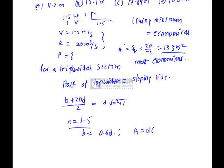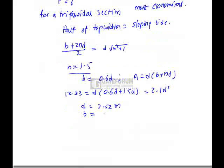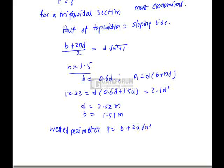Area equals D into B plus nD. So 13.33 equals D into 0.6D plus 1.5D, which equals 2.1D square. D equals 2.52 meters and B equals 1.51 meters. Wetted perimeter P equals B plus 2D root n square plus 1, which equals 10.6 meters. Option D is correct.